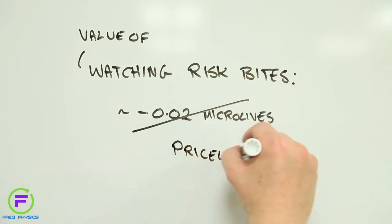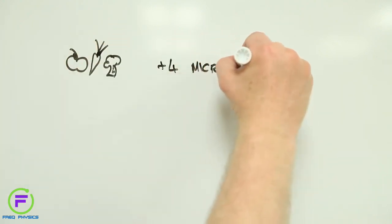And this is where Microlives get interesting, because they indicate how some things extend your life, as well as decrease it. Eating 5 portions of fruit and veggie day, for instance, is worth around 4 Microlives, giving you on average an additional 2 hours for every day you eat healthily.